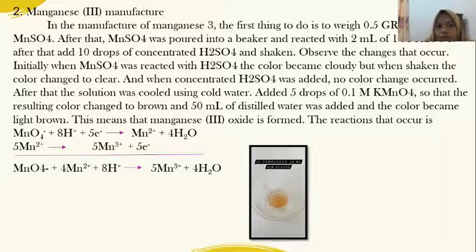Initially, when MnSO4 was mixed with H2SO4, the color became cloudy, but when shaken, the color changed to clear. And when concentrated H2SO4 was added, no color change occurred.